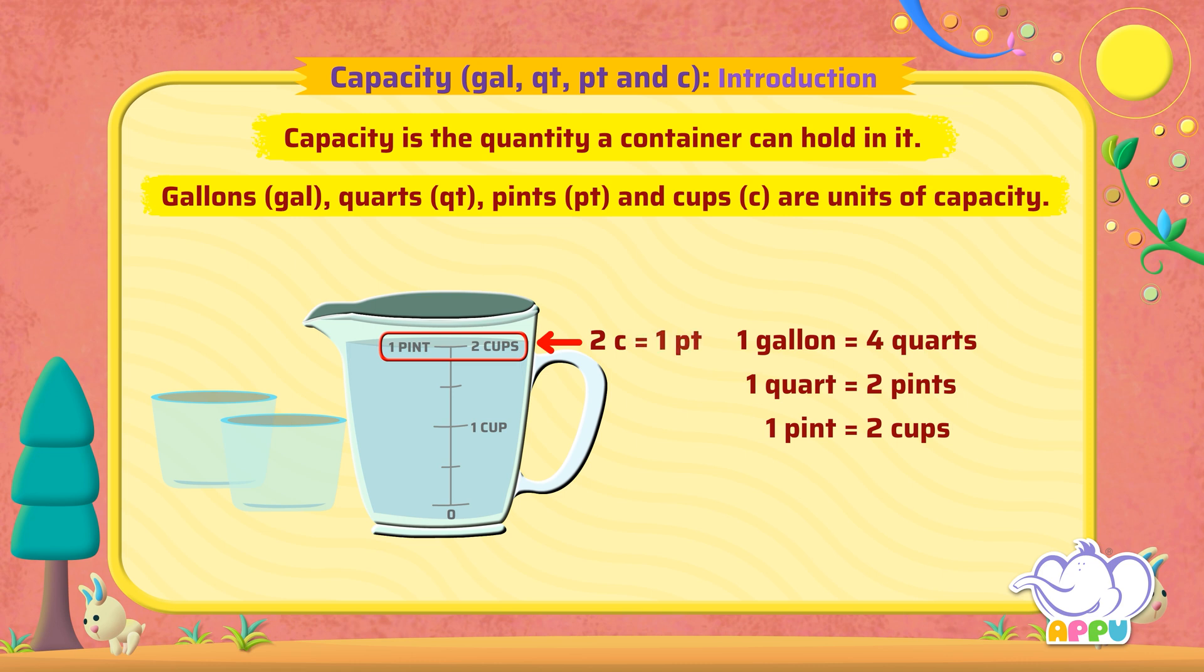So two cups is the quantity of water poured into the measuring cup. Two cups is the same as one pint. We can also say one pint is the quantity of water poured into the measuring cup.